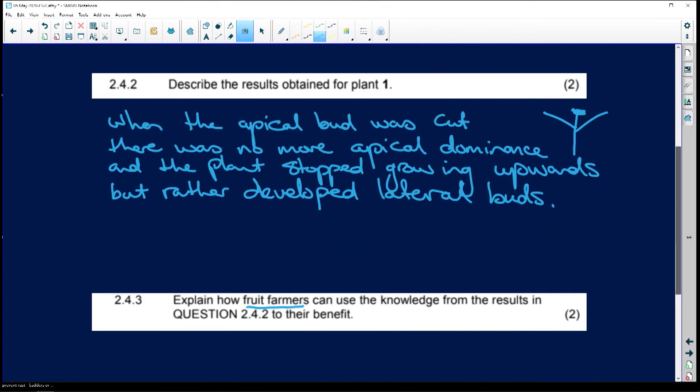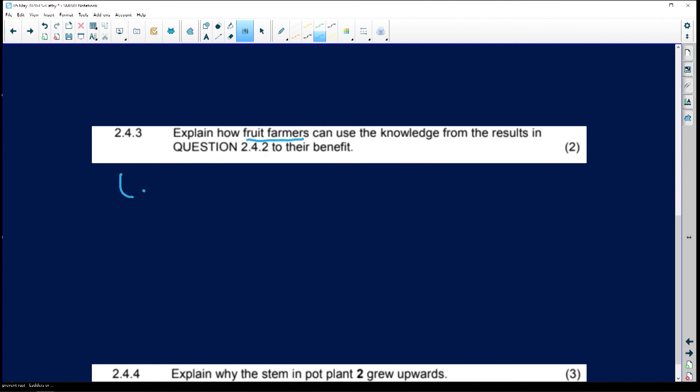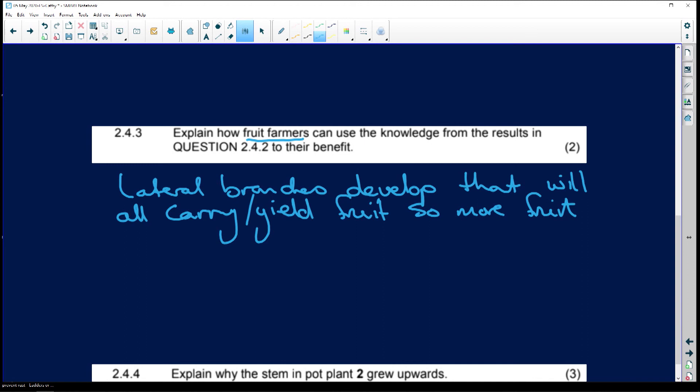This is an easy question because it's just common sense. So you'll say lateral branches develop, or you can say more lateral branches develop that will all carry, or instead of carry, you can say yield fruit. So more fruit. And it will be easier to pick. Your marks would have been here, lateral branches develop, so they carry more fruit. Or you could have said lateral branches develop, and the fruit will be easier to pick because it's going to be closer instead of having this long stem growing all the way up.